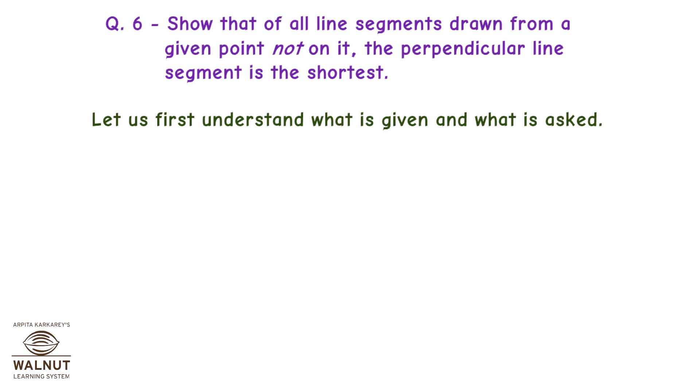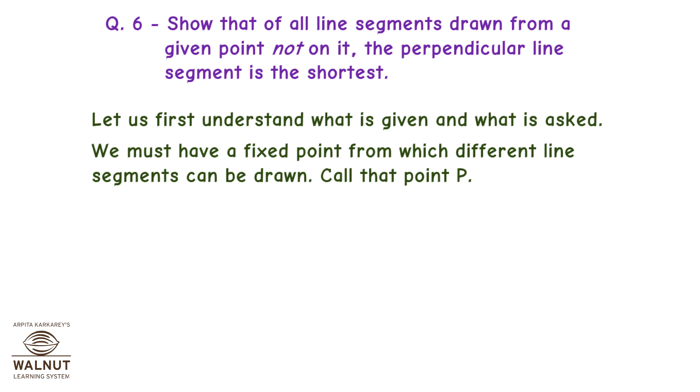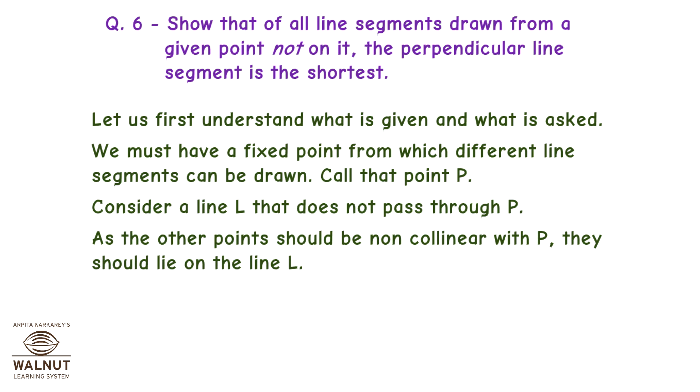Let us first understand what is given and what is asked. We must have a fixed point from which different line segments can be drawn. Call that point P. Consider a line L that does not pass through P. As the other points should be non-collinear with P, they should lie on the line L.